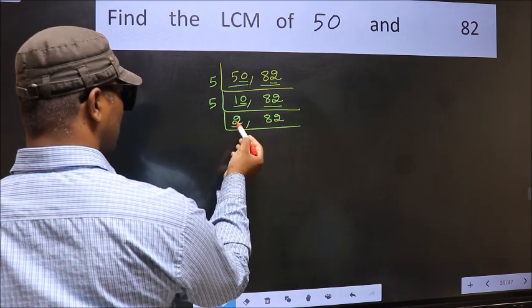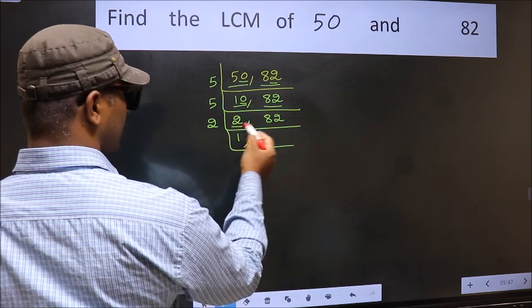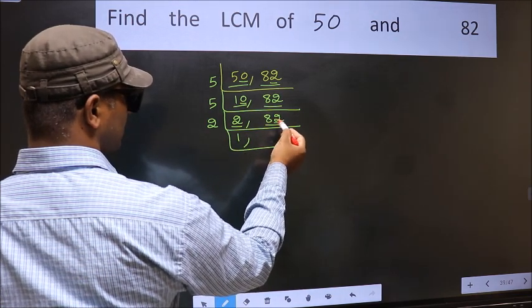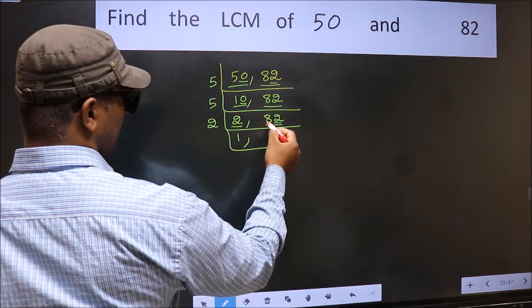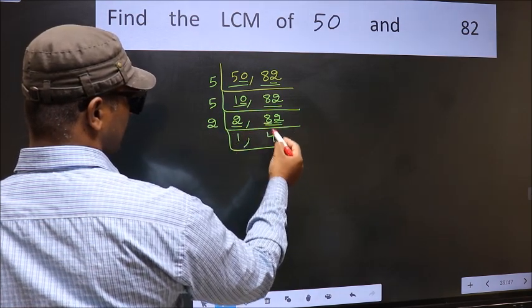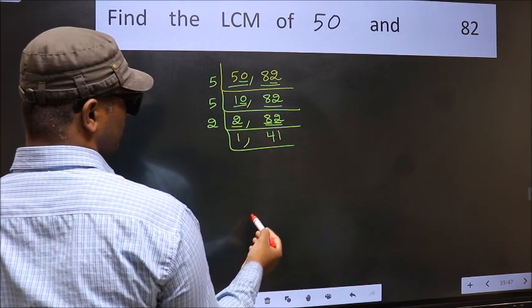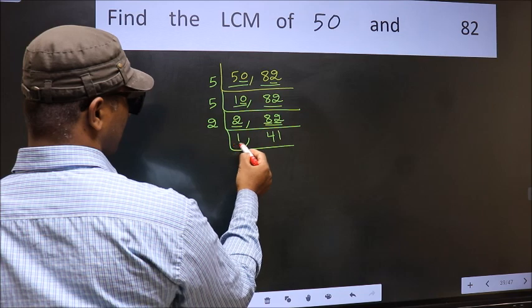Now here we have 2. 2 is a prime number, so 2 times 1 is 2. The other number, 82, last digit 2 is even, so this is divisible by 2. First number 8. When do we get 8 in 2 table? 2 times 4 is 8. The other number 2. When do we get 2 in 2 table? 2 times 1 is 2. Now we got 1 here.